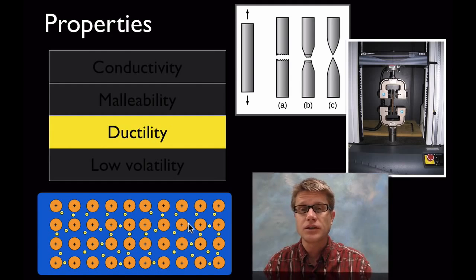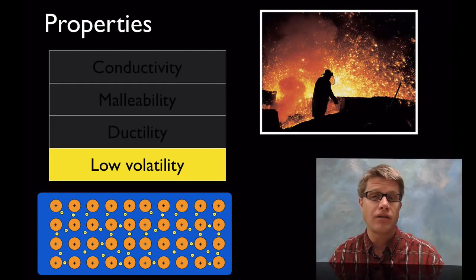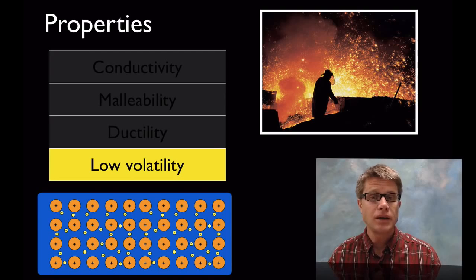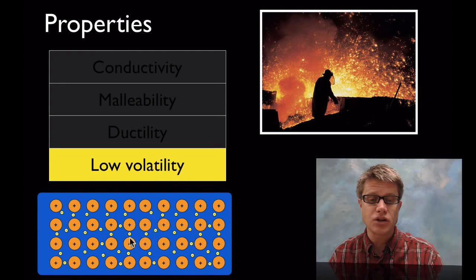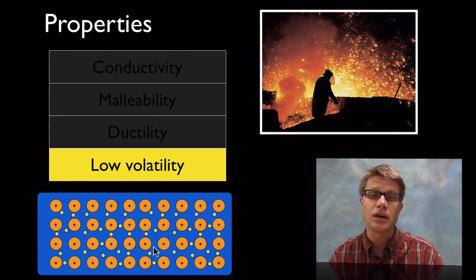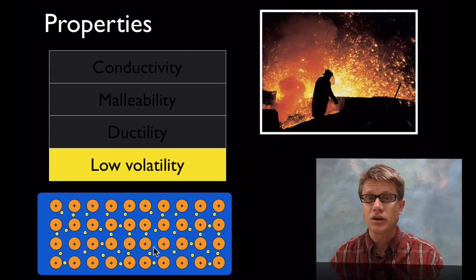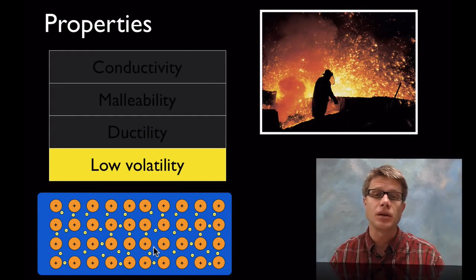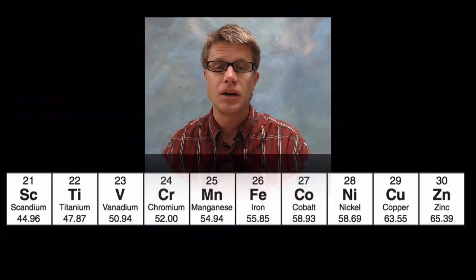They also show low volatility. What that means is that they're going to have a high melting point and a high boiling point. Why is that? Well think of all the positive charges we have down in these metals. We have all these negative charges. And so there's going to be a huge attraction between the two. And so it's hard to pull off individual ones to make them a liquid or eventually to make them a gas.